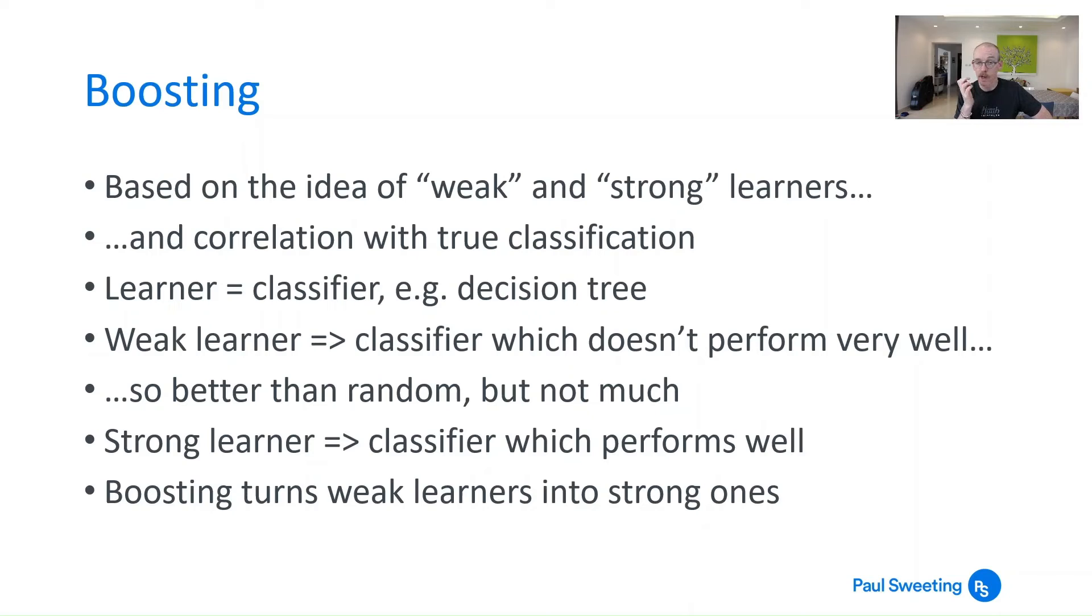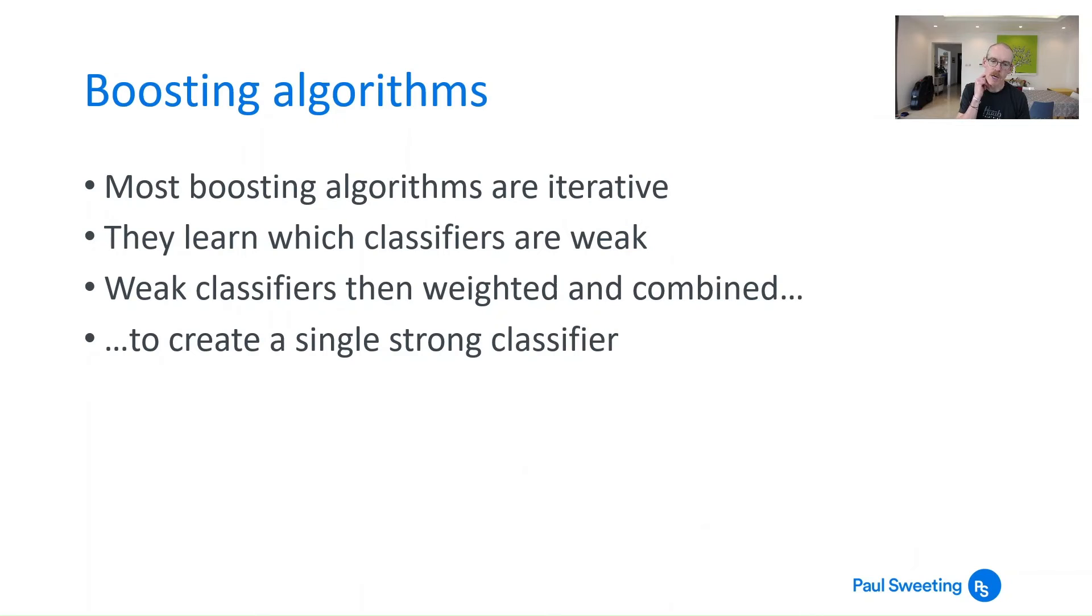So a weak learner is a classifier or decision tree that doesn't perform very well, maybe a little bit better than random but not much. A strong learner is a classifier which performs very well. And boosting turns weak learners into strong learners. So the algorithms are iterative. And what they try to do is they try to learn which classifiers, which decision trees are weak, and then try to weight them accordingly. So you take your weak classifiers and you weight them and you combine them to create a single strong classifier.